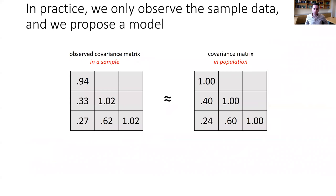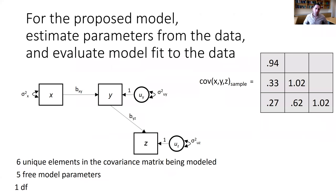In practice we don't know the generating causal process or the effect sizes. Instead, we observe sample data and propose a model. We have a fictitious observed covariance matrix obtained from a sample — an approximation of a population covariance matrix. We propose a model, estimate parameters from the data, and evaluate fit relative to the observed data. The structure of the model may be correct, but the effect sizes are unknown, so we label them with symbols and estimate them.